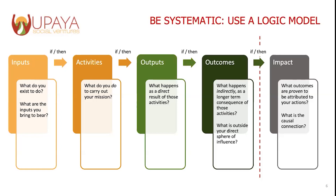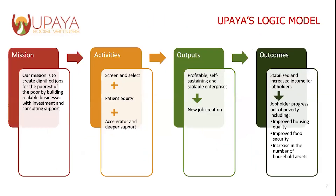Even if we don't do anything more rigorous than that to really prove impact, measuring outcomes and being very systematic about it can yield just a wealth of information and improve your models. And I will talk about how that has helped us. So here I show Upaya's version of the logic model. We start with our mission to create dignified jobs for the poorest of the poor by investing in scalable businesses. The primary activities we undertake include a very rigorous screening and selection process, and then we put the businesses we select through a four-month accelerator program and provide them deeper support.